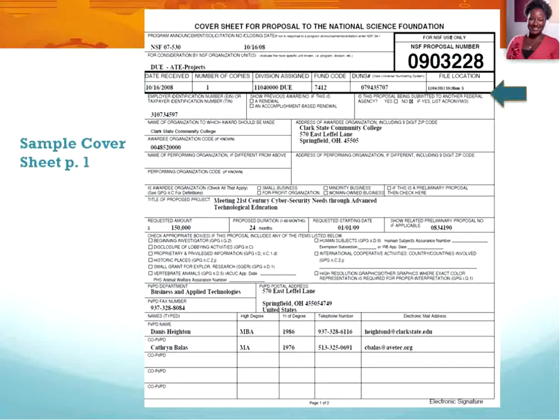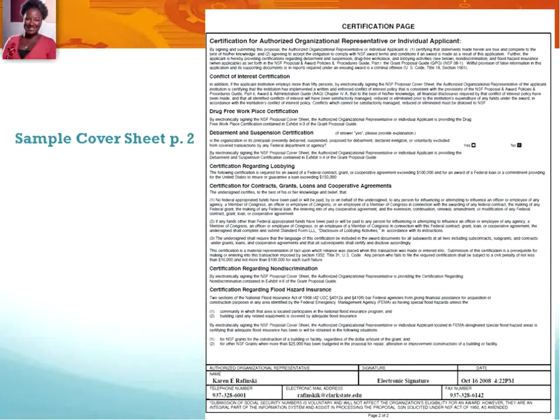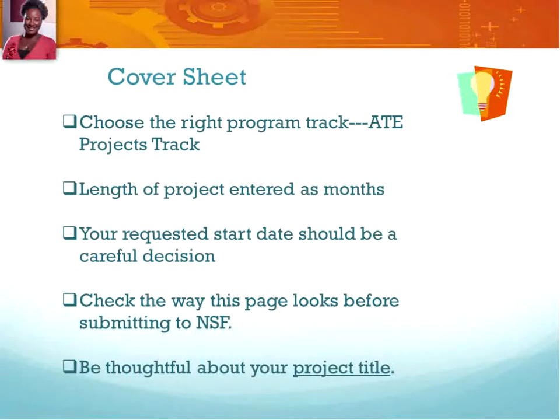The cover sheet is not a form you enter information into directly. You submit the information elsewhere and Fastlane populates the cover sheet with information submitted internally in sections that seem varied as you begin working on your proposal. If not done carefully, you can end up with PI or co-PI names on the cover sheet that did not have email addresses, phone numbers, or other pertinent information — and this can look sloppy to a reviewer. You can always look at the print-ready version on Fastlane prior to submission.